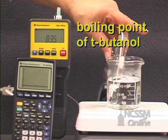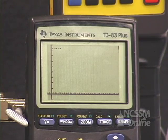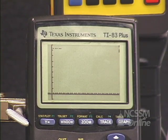The graph should be level at this point in time because the temperature is constant as long as there's any liquid T-butanol present.